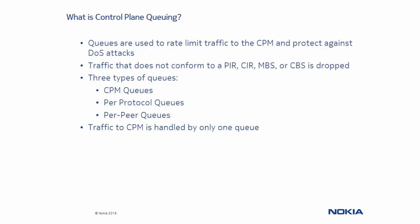Control plane queuing is used to protect the CPM's CPU from denial of service attacks, which could be high rates of TCP messages, large amounts of routing protocol updates, or many ICMP packets to name a few. Queues identify control plane traffic destined to the CPM and rate limit the traffic so that the CPU does not get over-utilized.